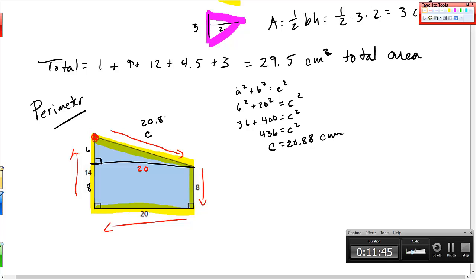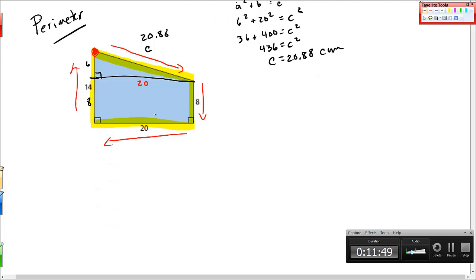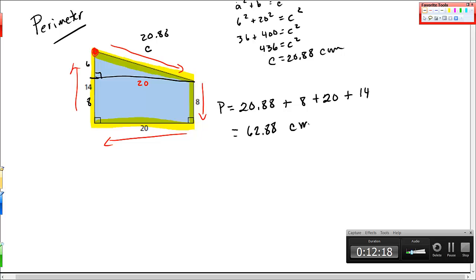20.88. And then the perimeter just becomes adding these. Perimeter equals 20.88 plus 8. That's my next. Plus 20. Plus, and this last side is 14 as a total. So that's 34, 42, and I think 62.88 centimeters. So this is a linear measurement.